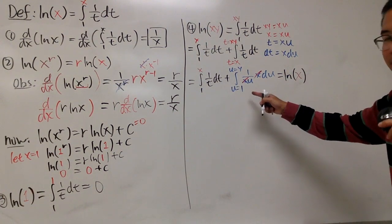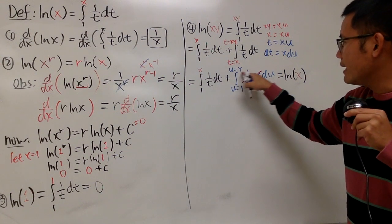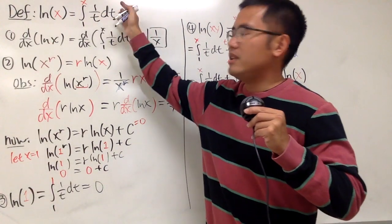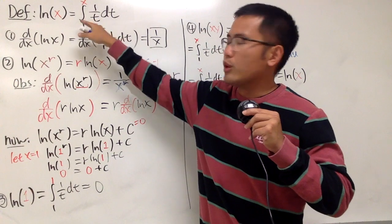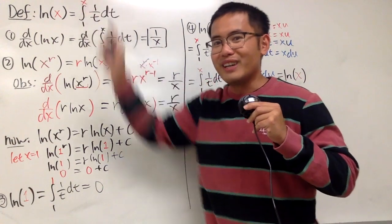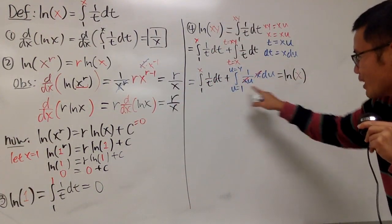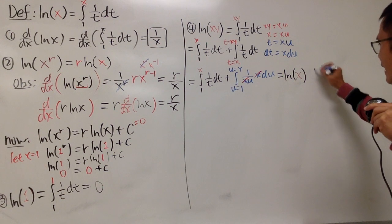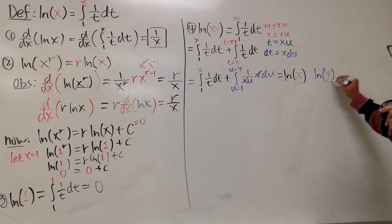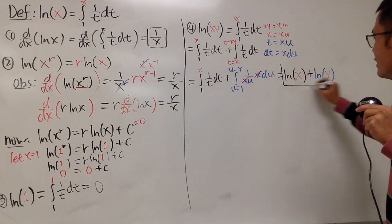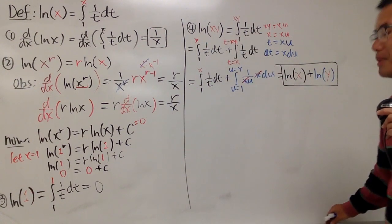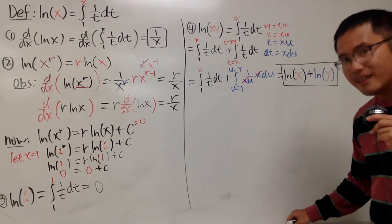For the second integral piece, after substitution we go from 1 to y of 1 over u, du. Since u is just a dummy variable, this is natural log of y. So combining both pieces, we have the property: ln(xy) = ln(x) + ln(y). Very interesting.